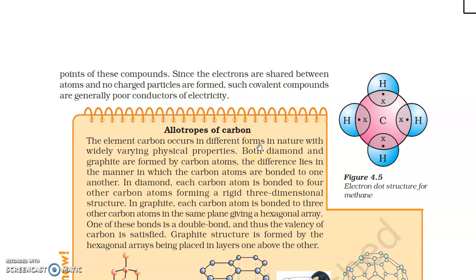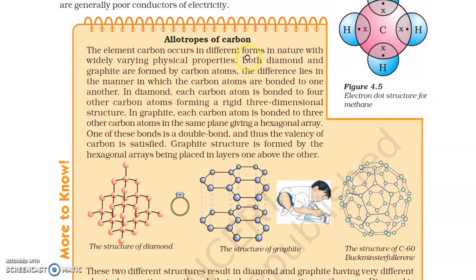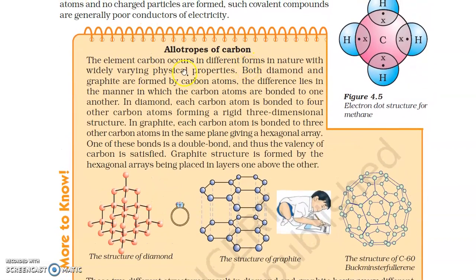Such covalent compounds are generally poor conductors of electricity. Before moving further, let's look at one more important topic — allotropes of carbon. This is a very important topic. The element carbon occurs in different forms in nature with widely varying physical properties.